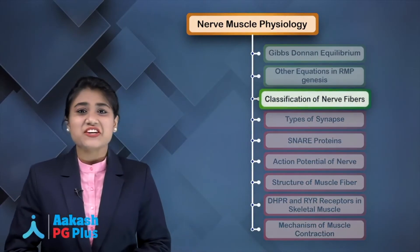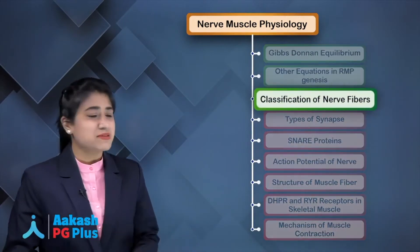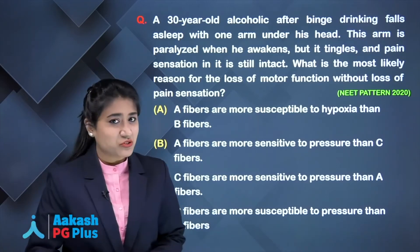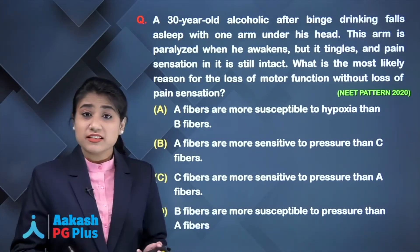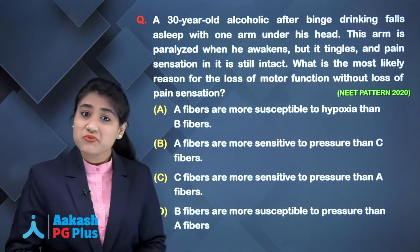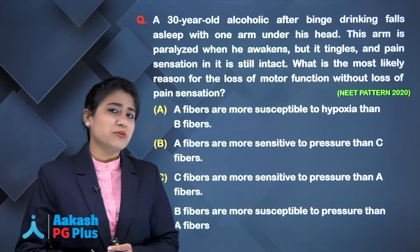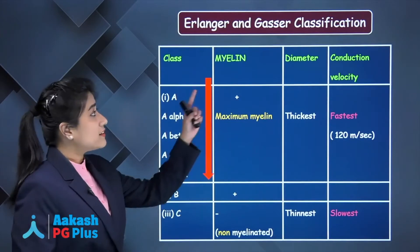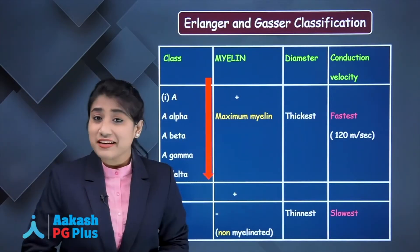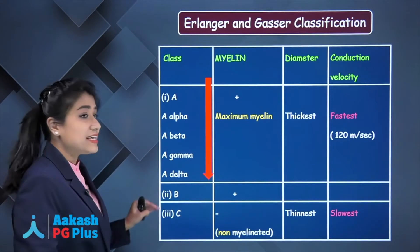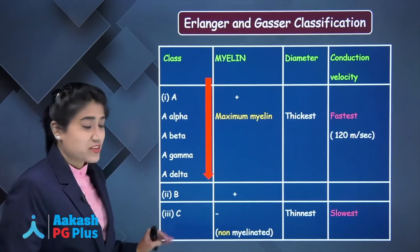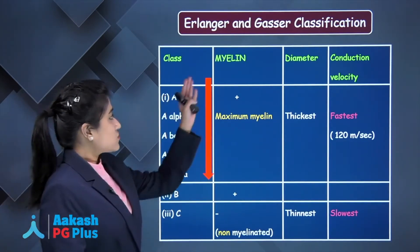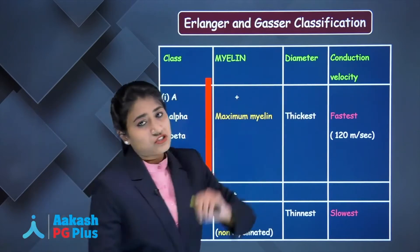Starting with classification of nerve fibers. This is a clinical scenario question regarding the susceptibility of different nerve fibers. According to Erlanger and Gasser, nerve fibers are classified into A, B, and C, based on myelination, diameter, and conduction velocity.